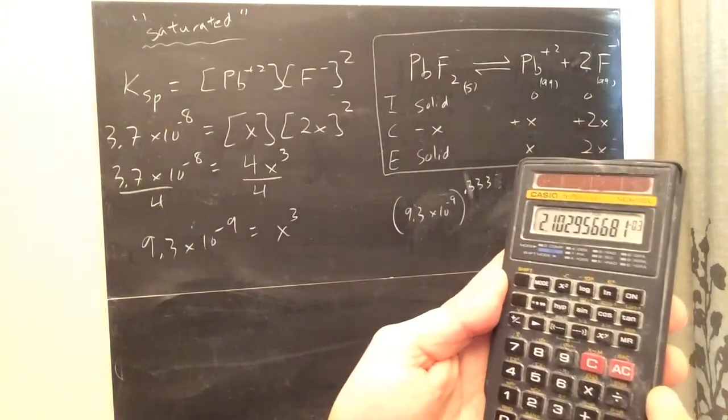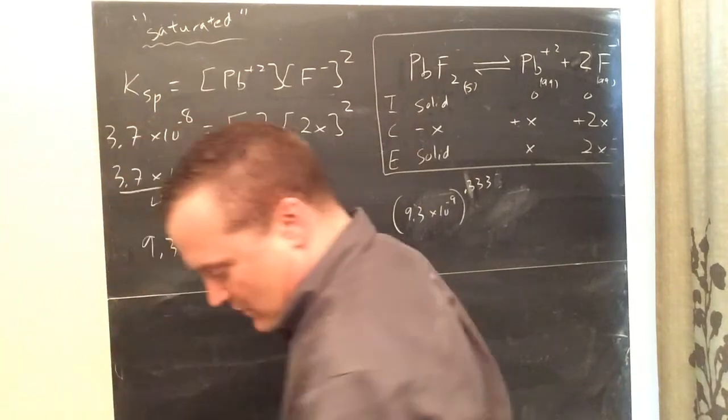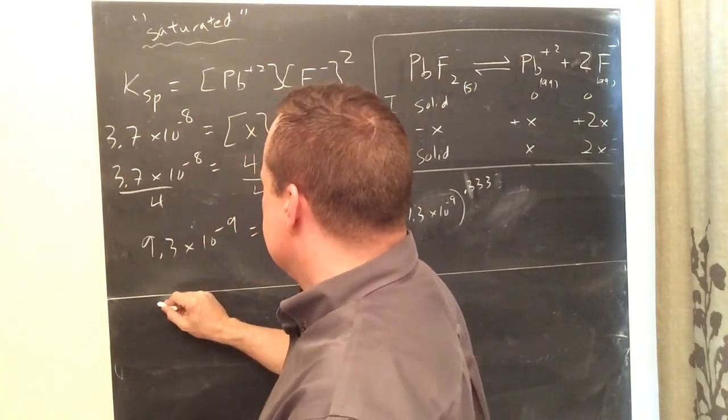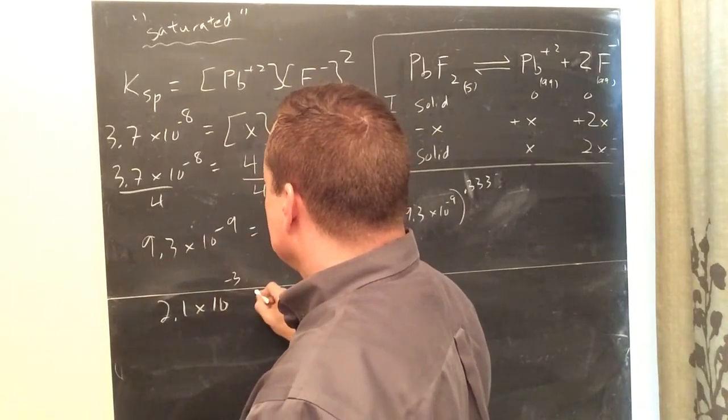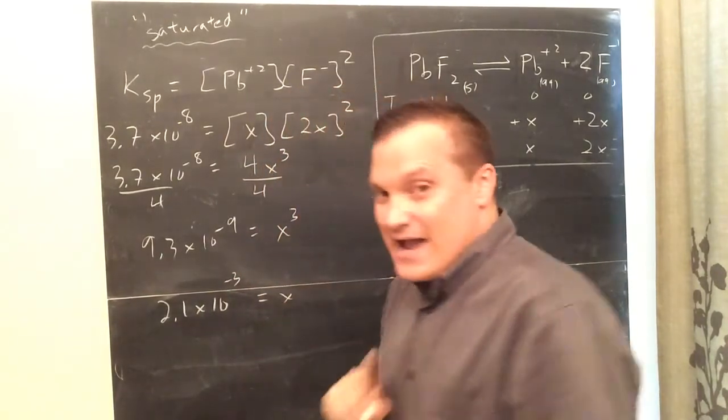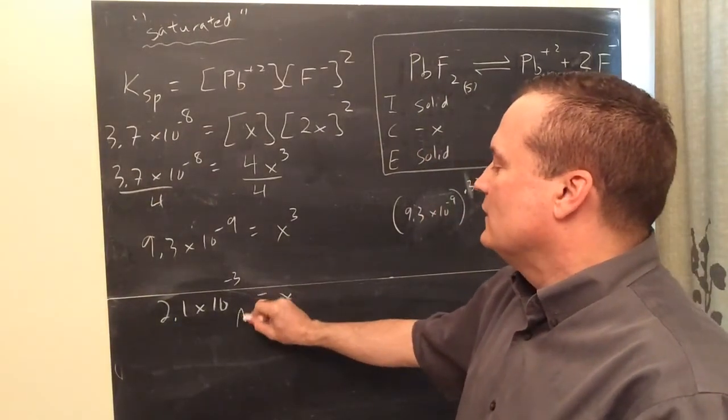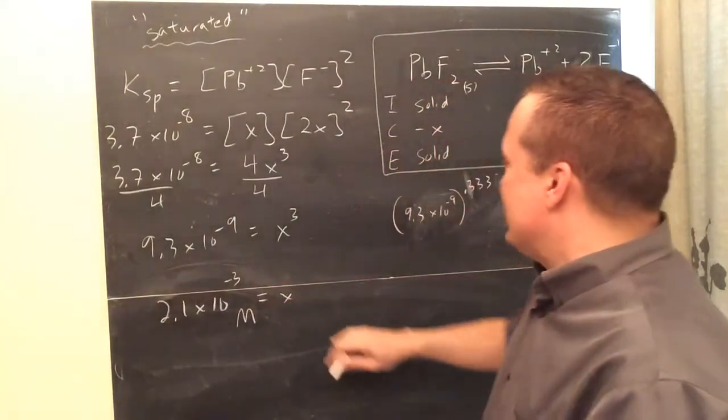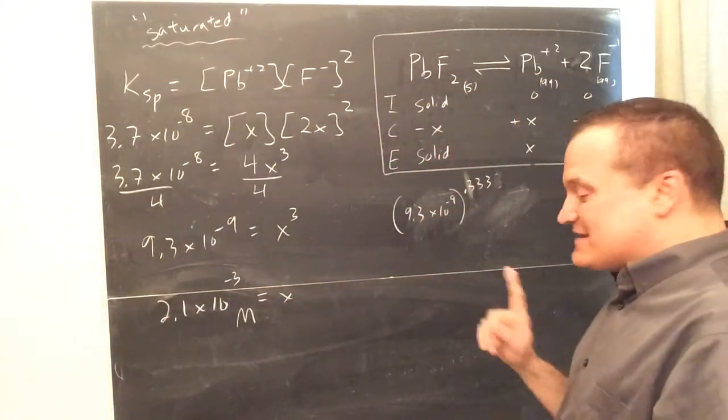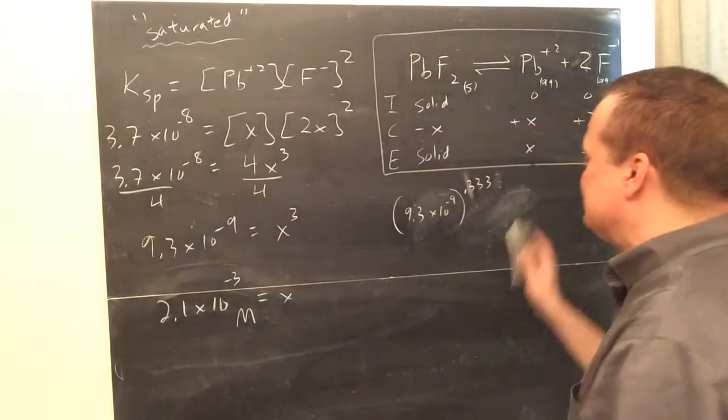And there it is, 2.1 times 10 to the negative 3. 2.1 times 10 to the negative 3 equals X. Now, I got to tell you a little bit more about this. First of all, 2.1×10 to the negative 3 molar is equal to X. Now, what exactly is X?